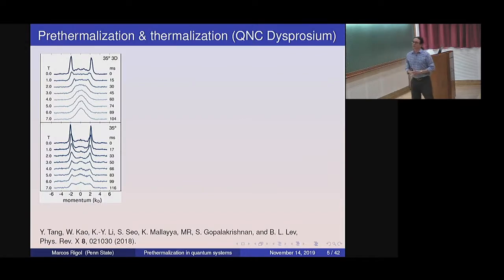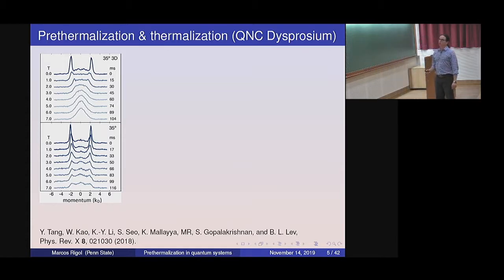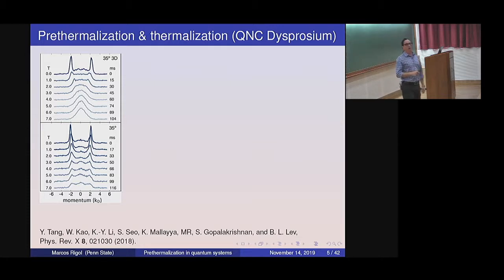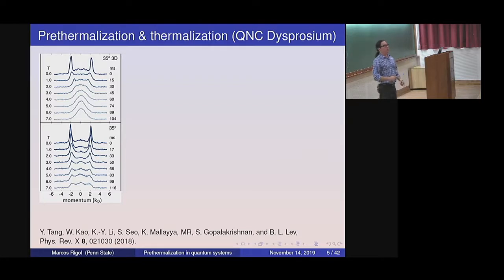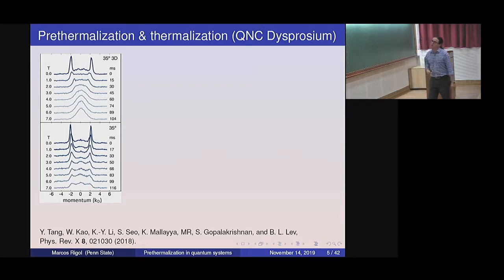There are beautiful experimental results from the group of Ben Lev at Stanford, closely related to the quantum Newton's cradle. What Ben implemented was a version of the experiment described by David Weiss, except he used a highly magnetic atom — so not only does it have contact interactions, it also has some long-range dipolar interactions. The initial state is the same: a lattice is pulsed and all atoms are kicked from zero momentum to finite momentum.